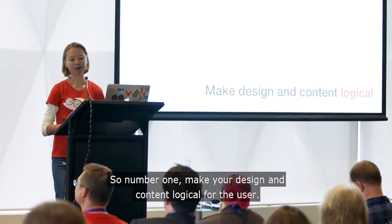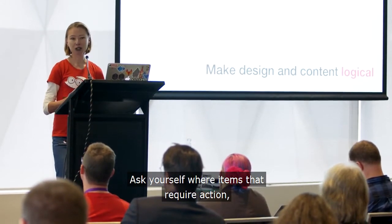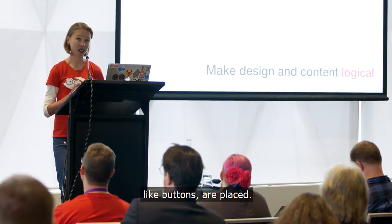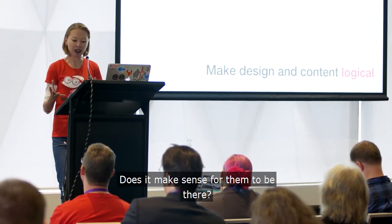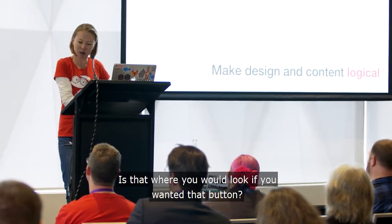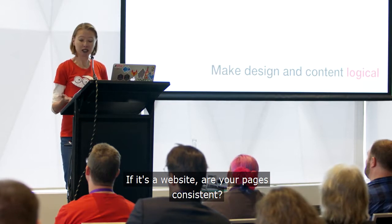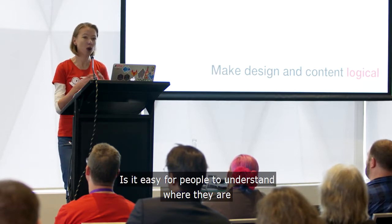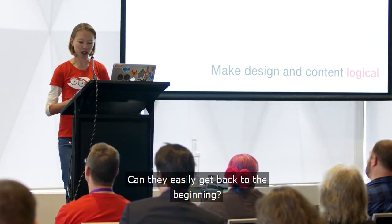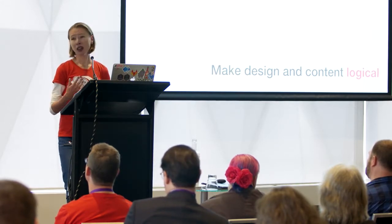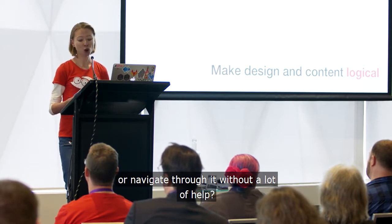Number one: make your design and content logical for the user. Ask yourself where items that require action, like buttons, are placed. Does it make sense for them to be there? Is that where you would look if you wanted that button? If it's a website, are your pages consistent? Is it easy for people to understand where they are in relation to the rest of the content? Can they easily get back to the beginning? And is it simple enough that users can work out how to use it or navigate through it without a lot of help?